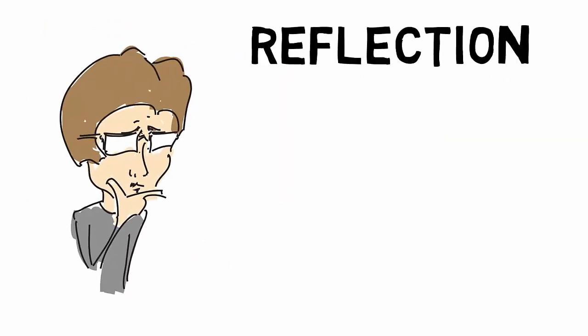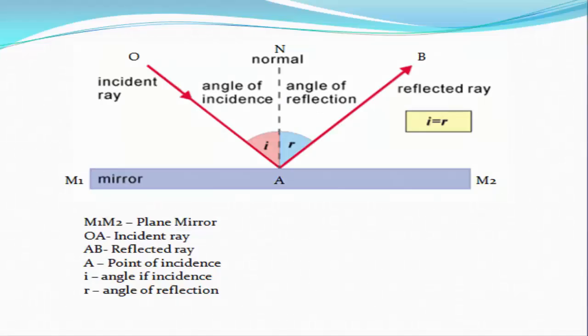Now we are going to talk about reflection of light. As you can see in this image, M1 M2 is a plane mirror, a ray of light OA falls on the mirror at point A and is reflected in a different direction along AB.